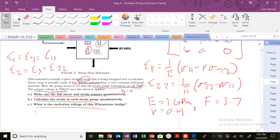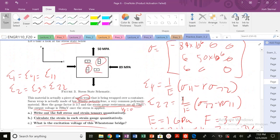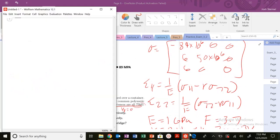So we need to write out the full stress and strain tensors quantitatively, calculate the strain in each gauge quantitatively, and what's the excitation voltage of this Wheatstone bridge? So we know that our delta V-naught is equal to 700 times 10 to the minus 3 volts. So we are going to use in this problem delta V-naught over 4 times epsilon 1 minus epsilon 2 minus epsilon 3 plus epsilon 4. We just need to figure out what's our V-naught.